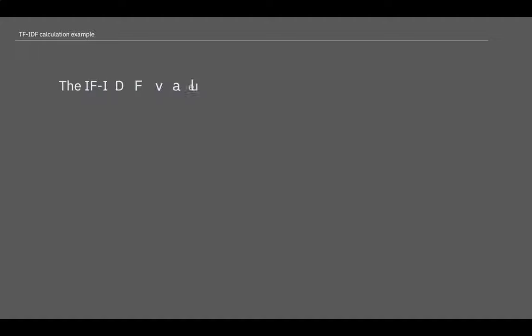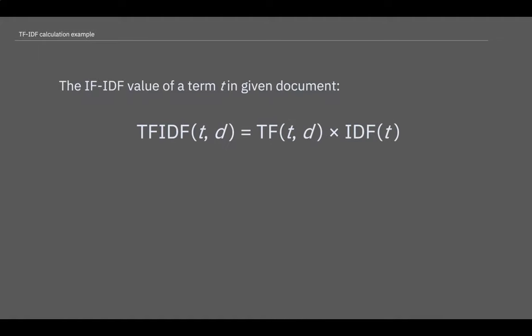The TF-IDF value of a term T in a given document D is calculated using this formula. Note that the TF-IDF value is specific to a single document D, where IDF depends on the entire corpus.